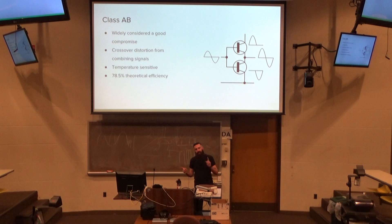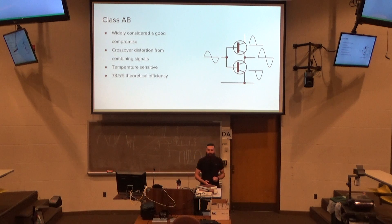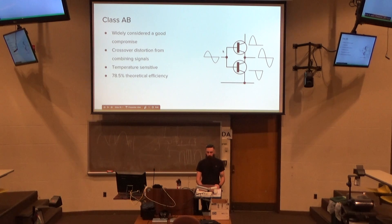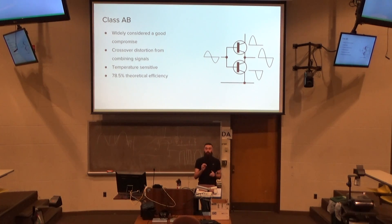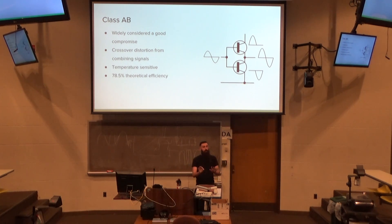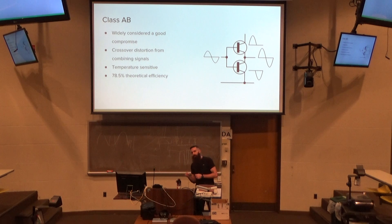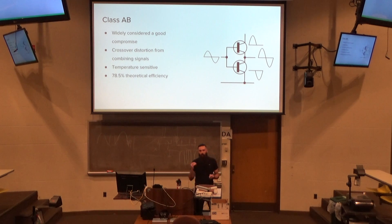Class AB is when you combine B and A. You take two B's, you reverse them, and you put them together. So one MOSFET outputs the top half of the waveform, and one MOSFET outputs the bottom half of the waveform. Then you take them and combine them. You can do this really well if you use a very good technique to combine them and very high-quality parts. Some of the best amplifiers in the world use this technique, and you can actually combine it with Class A where you have it all on all the time.